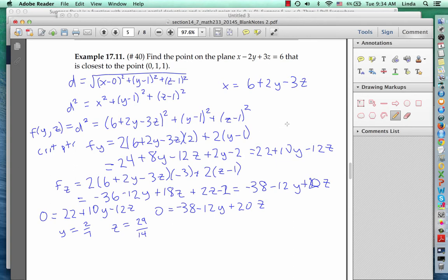And then if you plug back in to this top equation for x, you get that x has to equal 5 fourteenths. And this gives us our candidate point 5 fourteenths, 2 sevenths, 29 fourteenths.